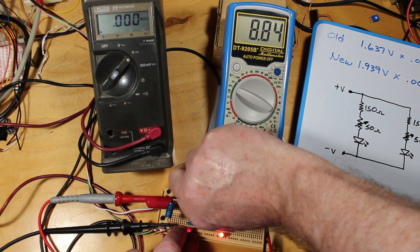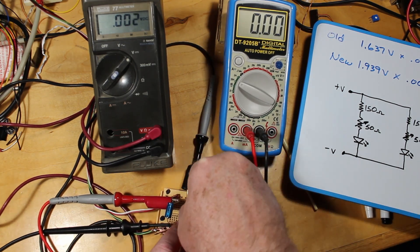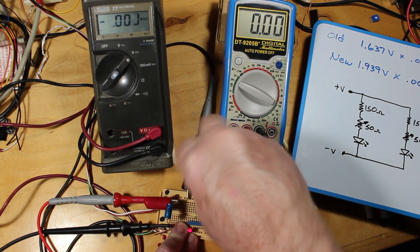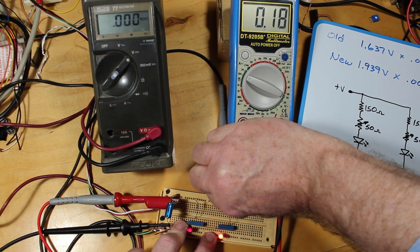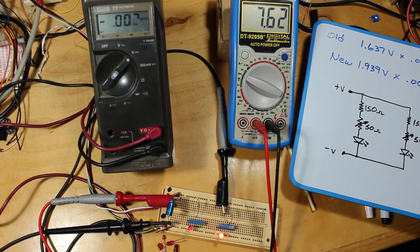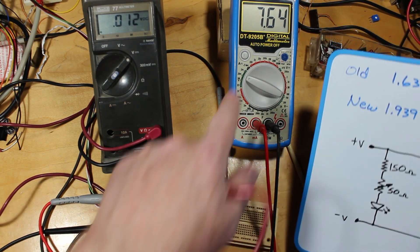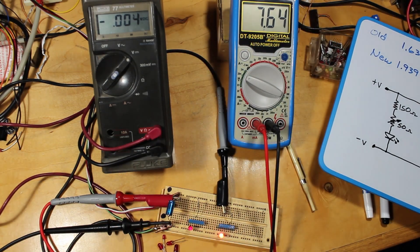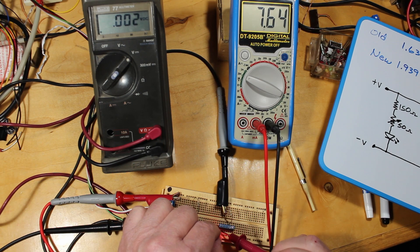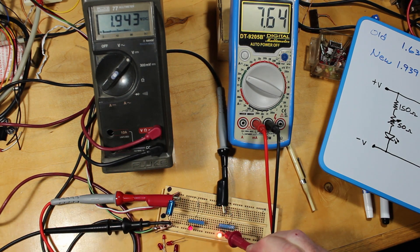And just to show, just to prove that the current through the other guy is what I say it is, I'm going to take and run this around. And we'll take and hook this guy up. And there's the 7.6. See, it's drifted a bit. This is 7.47. And the voltage across here is 1.943.